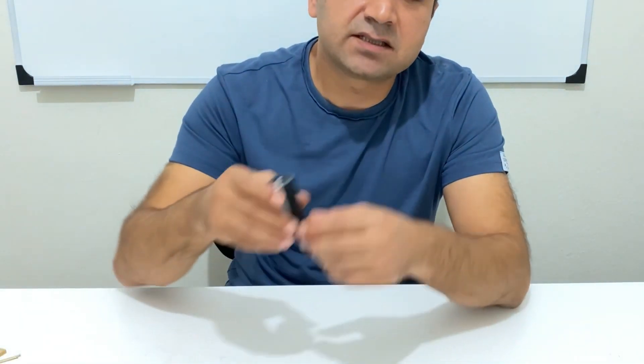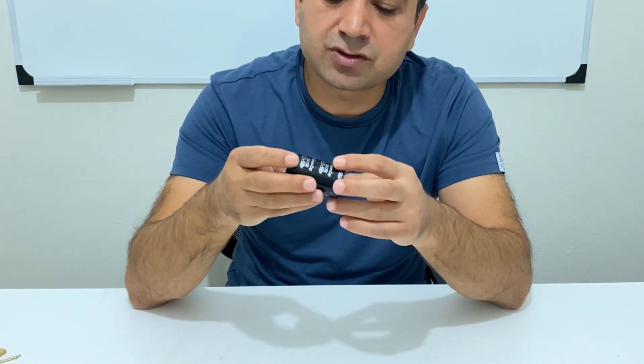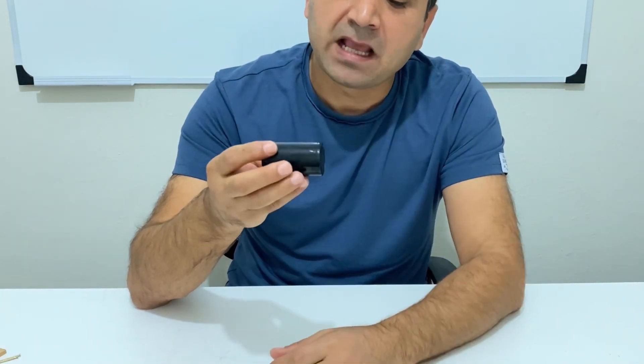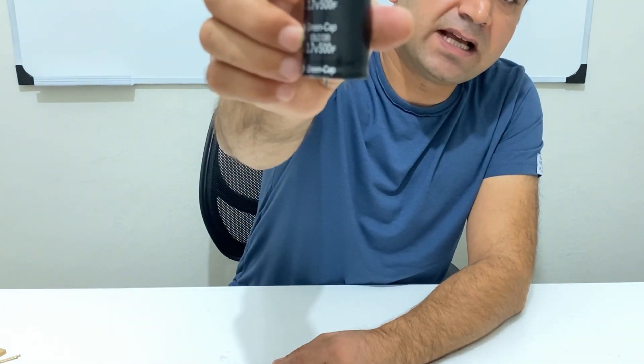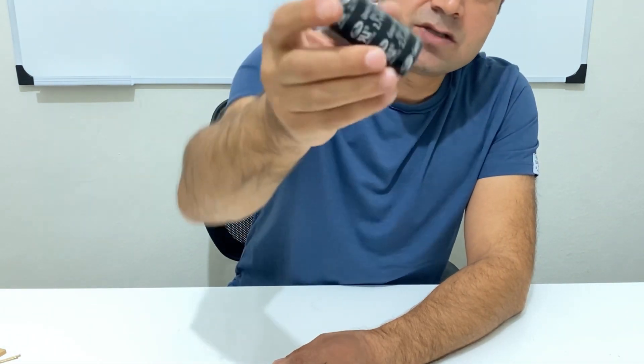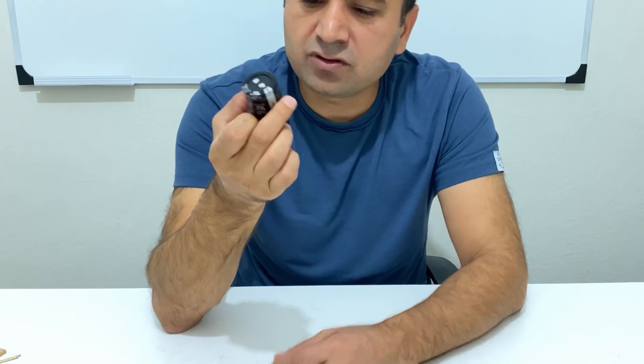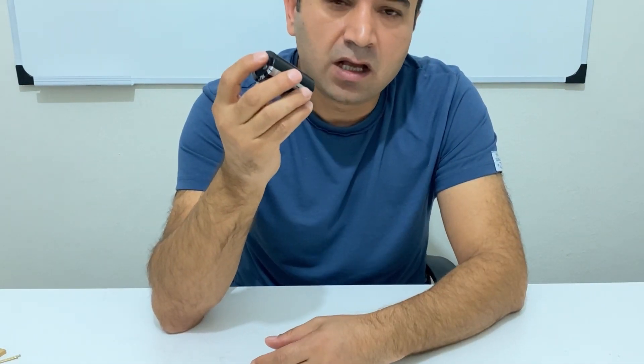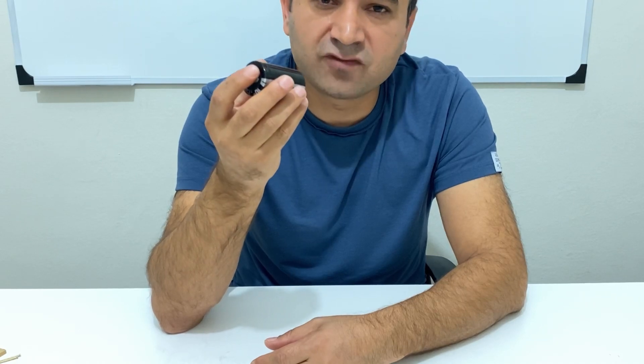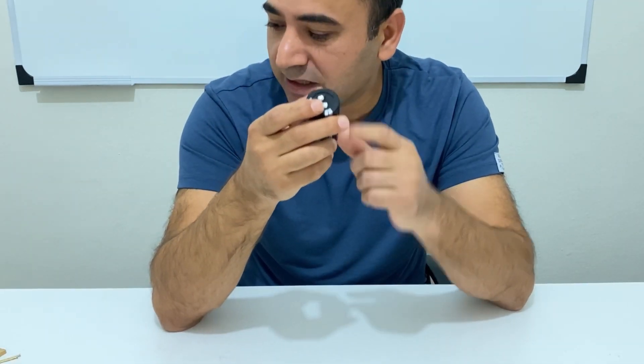So let me show you the materials and components we are going to use to build our welder machine. I have a supercapacitor here, 2.7 volts and 500 farads. If you don't have the supercapacitor, don't worry about that. You can also use a four or six volt lead acid battery. It will work as well.